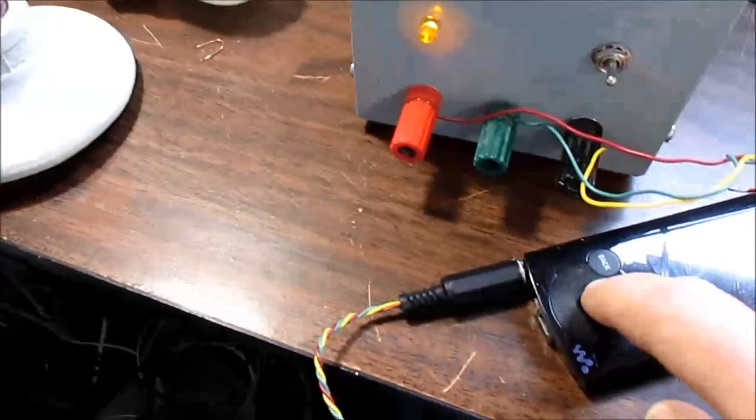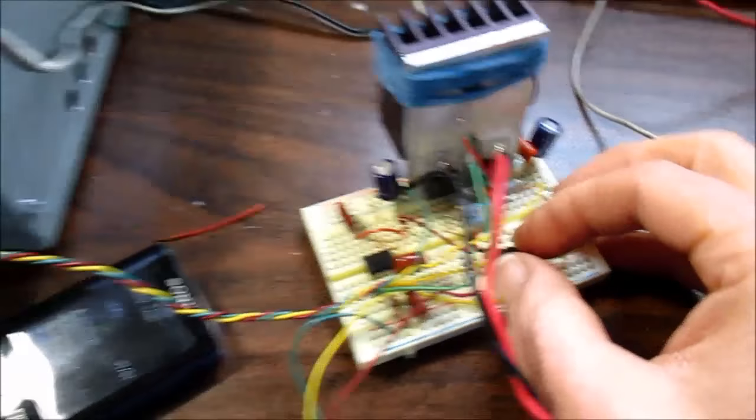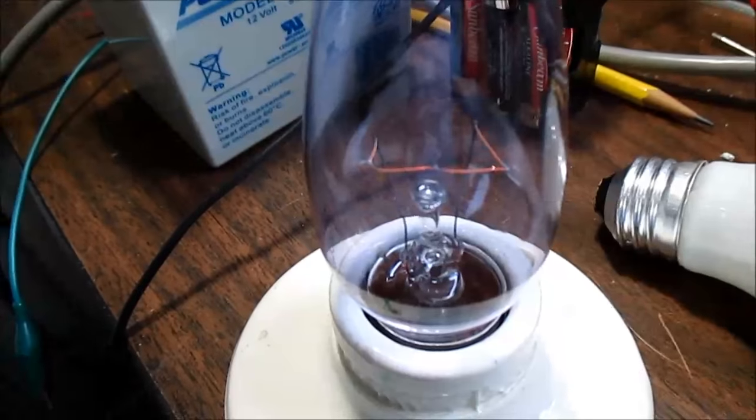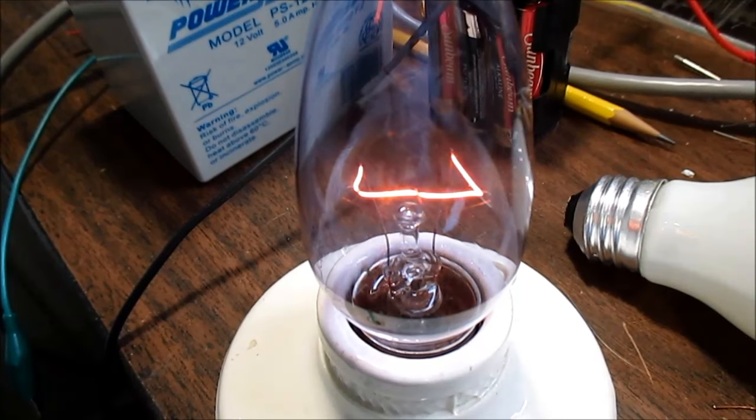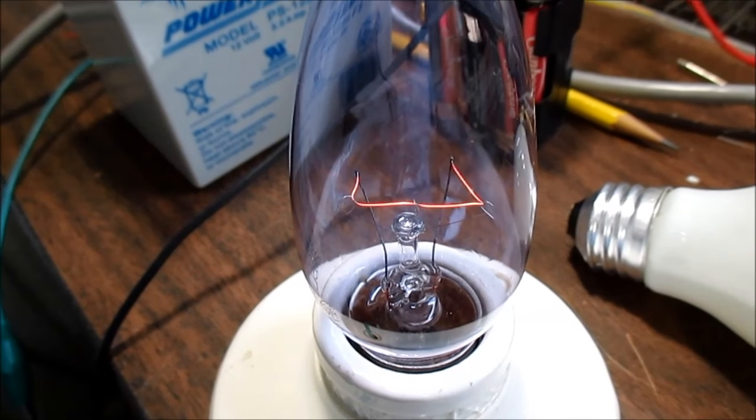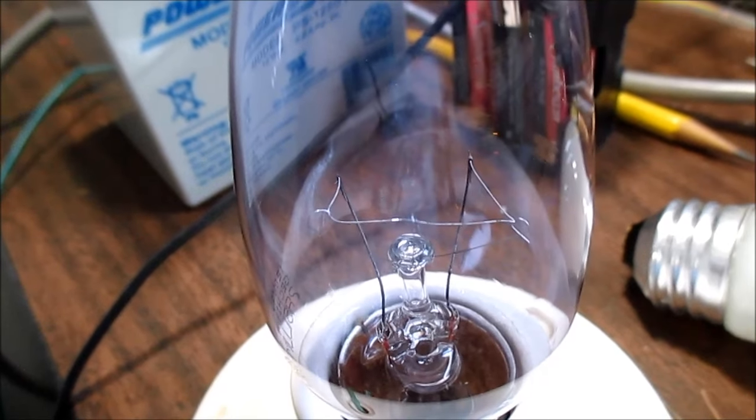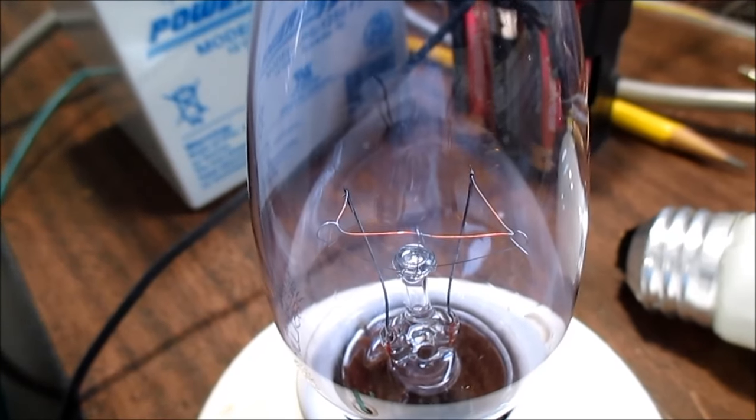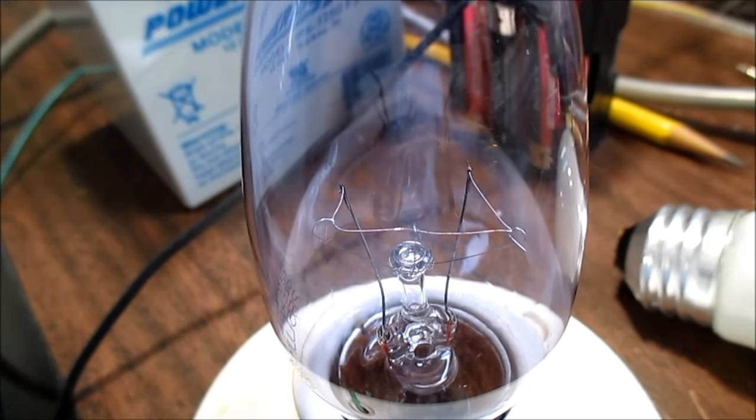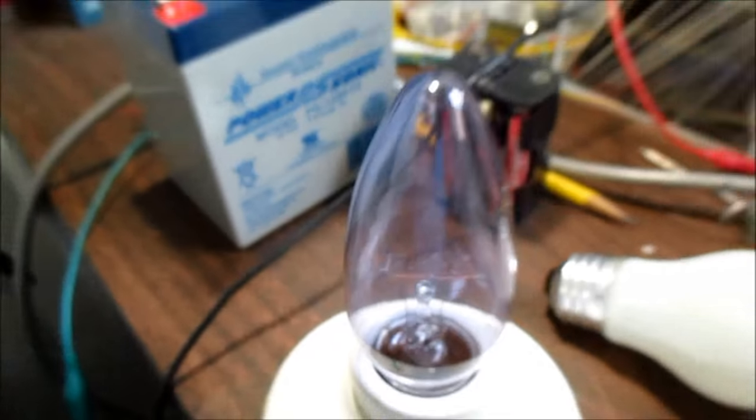You can also adjust the bias kind of using this bulb. So if I adjust the bias, see it and get the bias too high, the current goes up and makes the bulb brighter. Goes completely out if I turn it down too much. But I just want a little bit of glow there. This is not really a technical way of setting the bias.